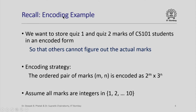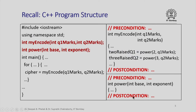Let us recall the encoding example we had seen in an earlier lecture. We wanted to store the quiz 1 and quiz 2 marks of all CS101 students in an encoded form so that others cannot figure out the actual marks. The encoding strategy was that the ordered pair of marks m, n will be encoded as 2 raised to m times 3 raised to n, assuming all marks are integers in 1 through 10. Here is the C++ program structure we had seen earlier, with the focus on parts involving function calls.